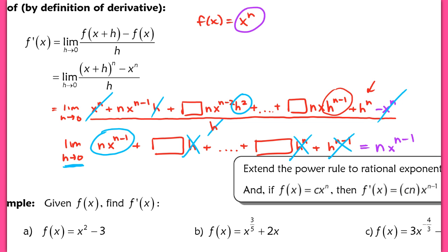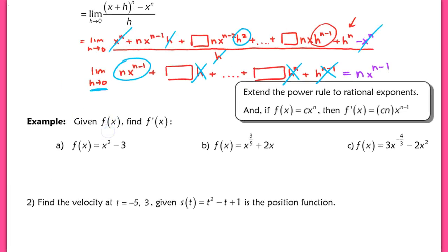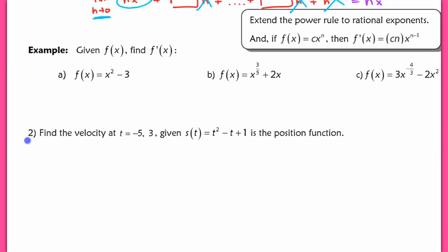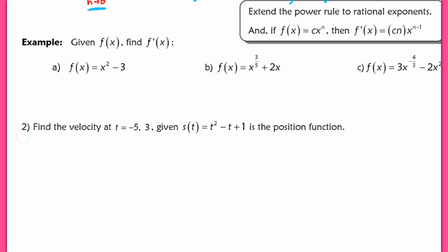The proof and how you actually use the rule are completely different. I just wanted to show you the background. Basically, we can extend the power rule to rational exponents — even if n is not an integer, the rule still applies. We can also handle a constant out in front: multiply that constant by n and still take the n minus 1 power.